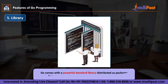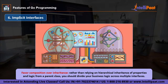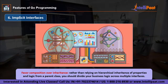Go comes with a powerful standard library distributed as packages, which also reduces importing complex secondary libraries. The last feature is that Go has implicit interfaces. Anyone who has read solid coding books and design patterns has probably heard the mantra: favor composition over inheritance. Rather than relying on hierarchical inheritance of properties and logic from a parent class, you should divide your business logic across multiple interfaces. Another popular adage is: program to an interface, not an implementation. An API should only publish the contract of its expected behavior, not details about how that behavior is implemented. Unlike other languages, interfaces in Go are not implemented explicitly, but rather implicitly.